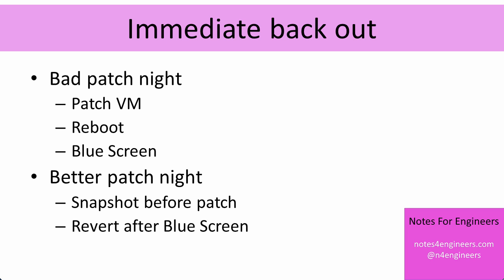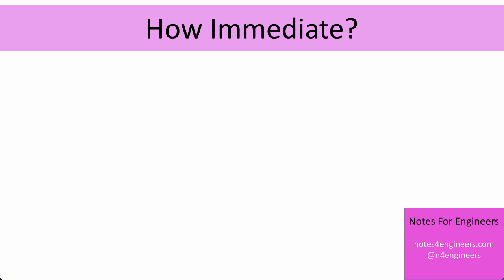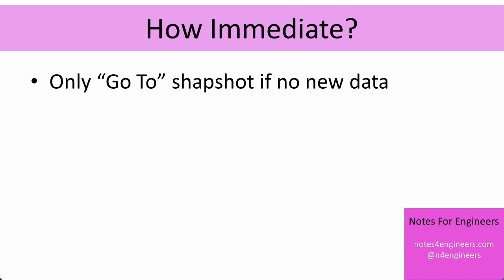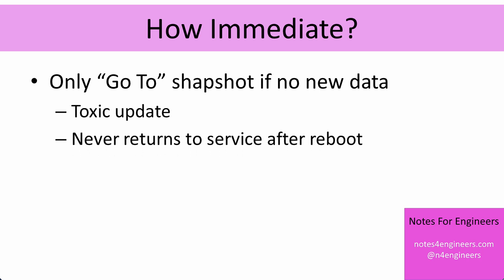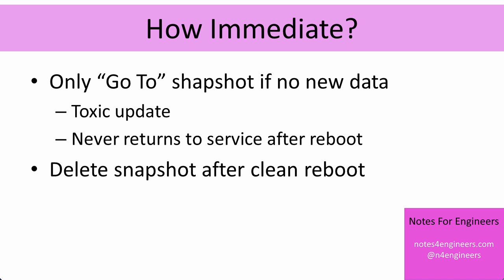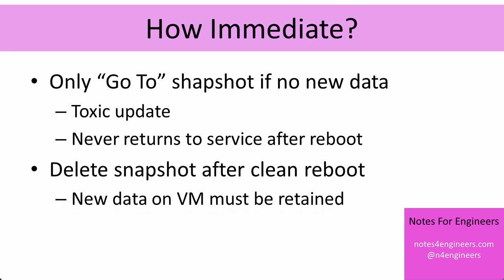This is only for an immediate back-out — that's really critical. One thing I see some customers do is snapshot the virtual machine before patching it and leave the snapshot in place for a while, with an expectation of going to the snapshot a couple of days later. But you can't go to the snapshot on a production machine if new data might have arrived, because going to it is going to discard all of the changes since the snapshot. The go-to option is only there for a really toxic update where the virtual machine never returns to service after the reboot. You should delete that snapshot if the VM comes back into service and new data could arrive. It's not valid to say you're going to back out two days or a week later using the snapshot. At the end of that patch window, the snapshot should be gone. There should only ever be one snapshot on a production machine.